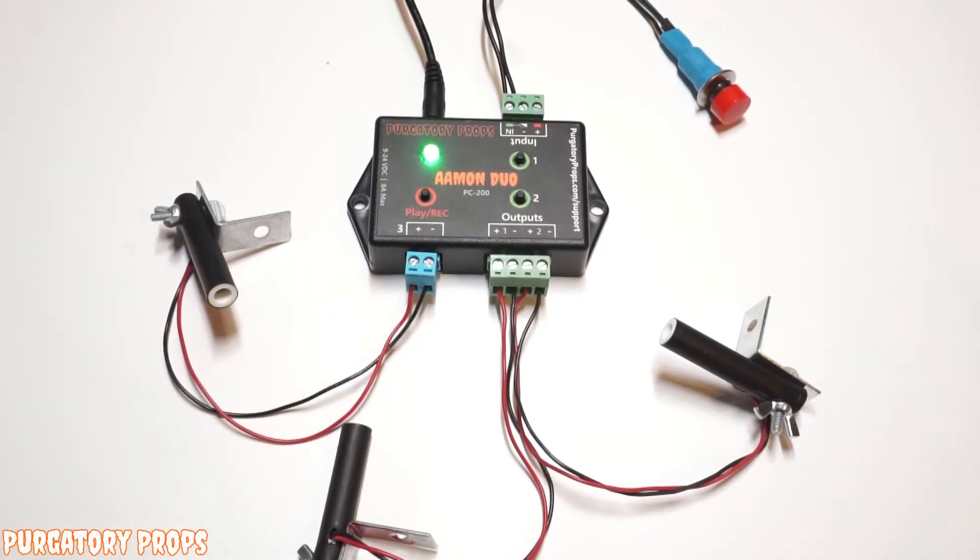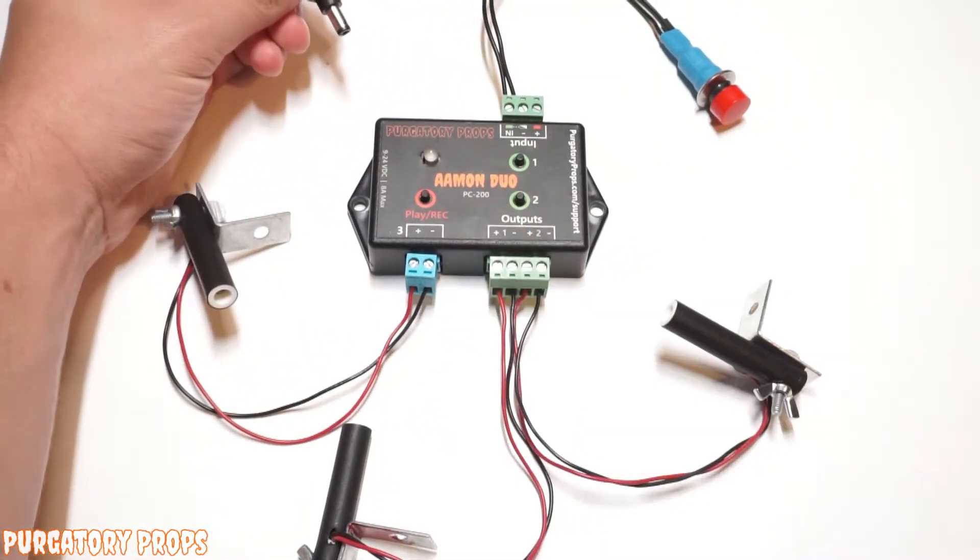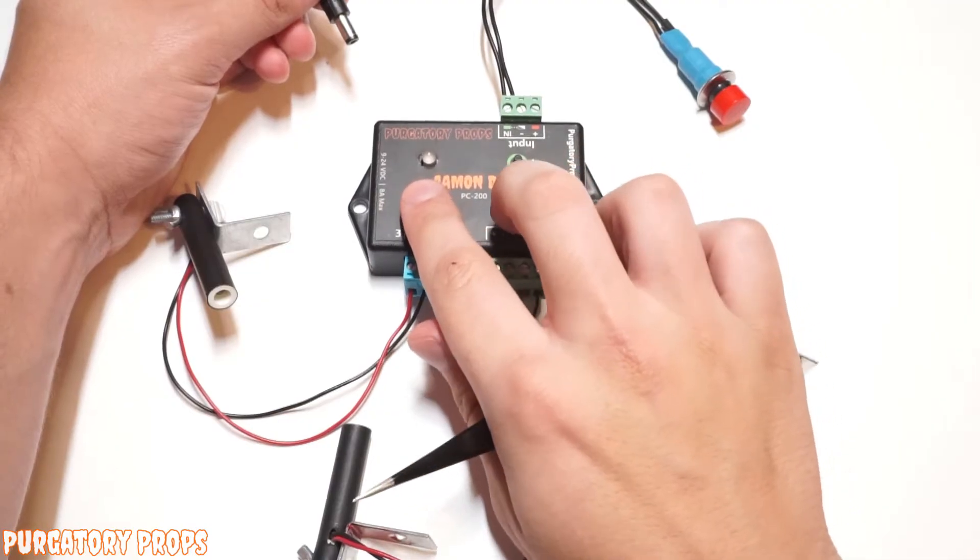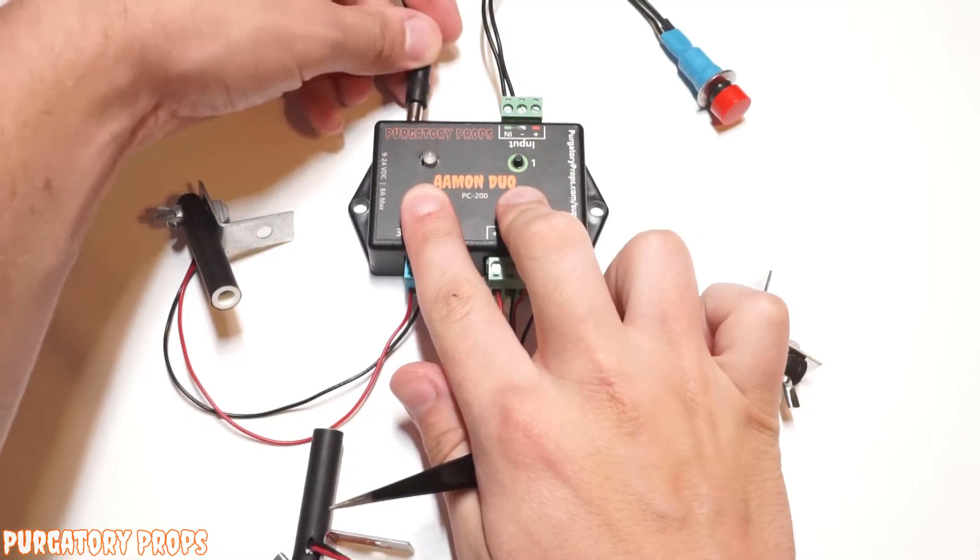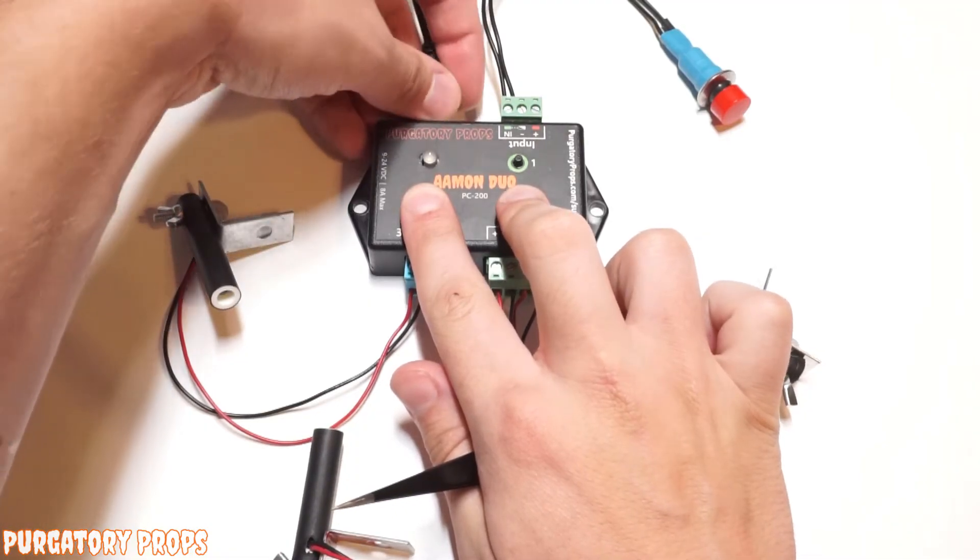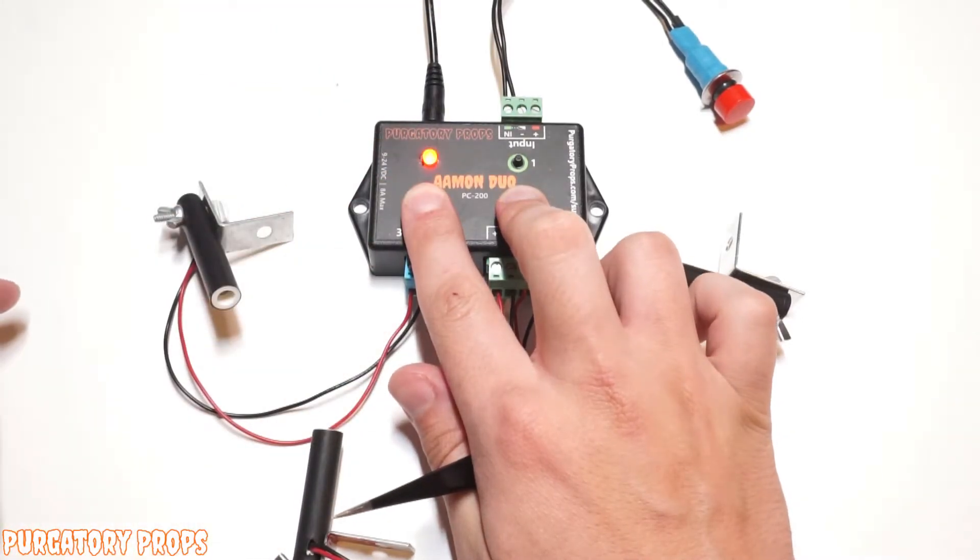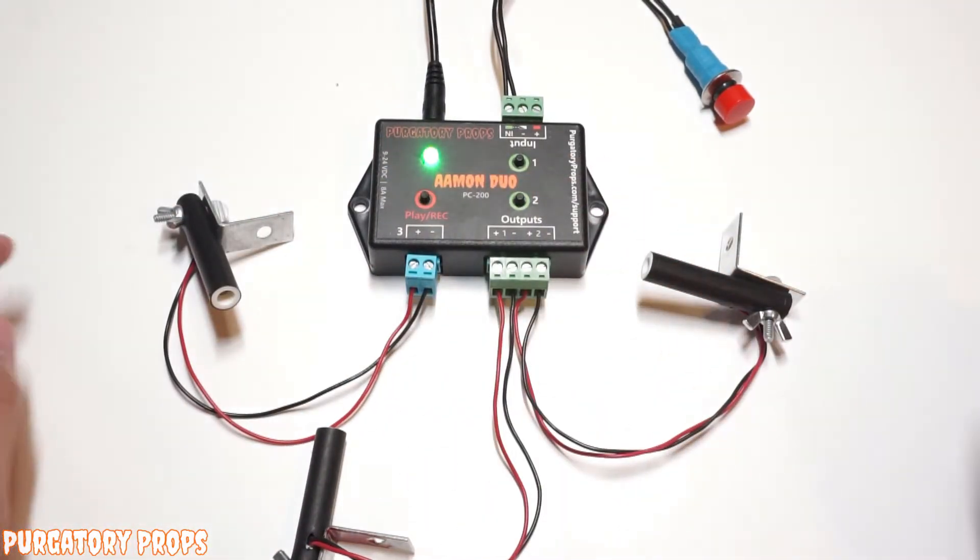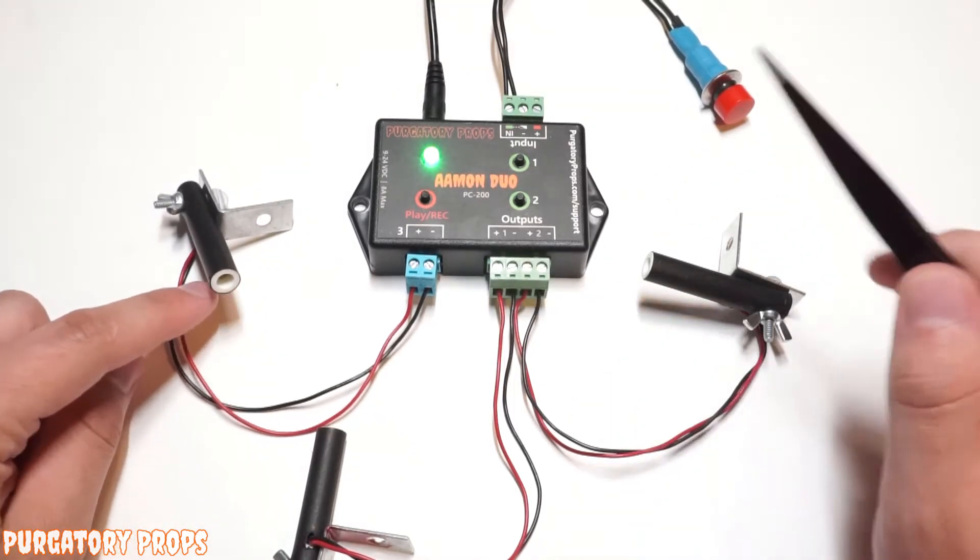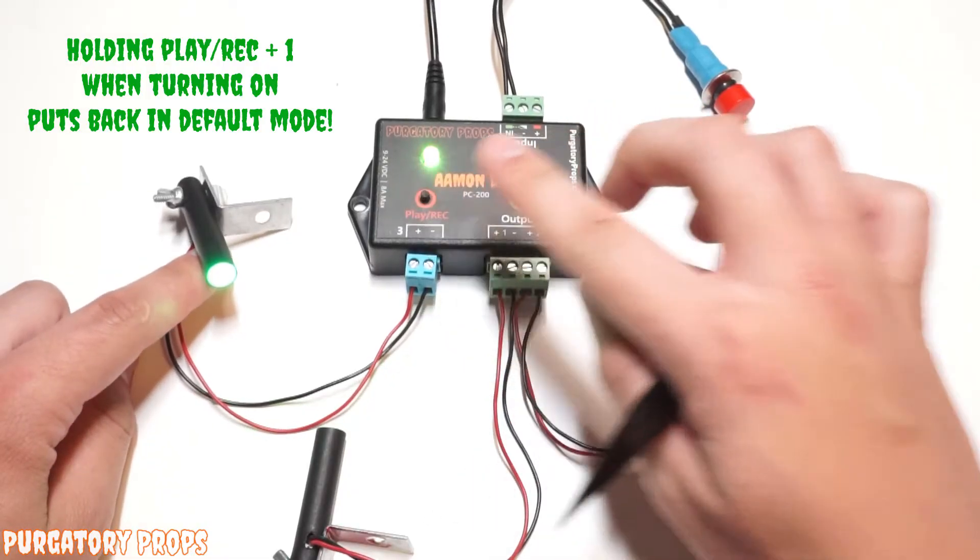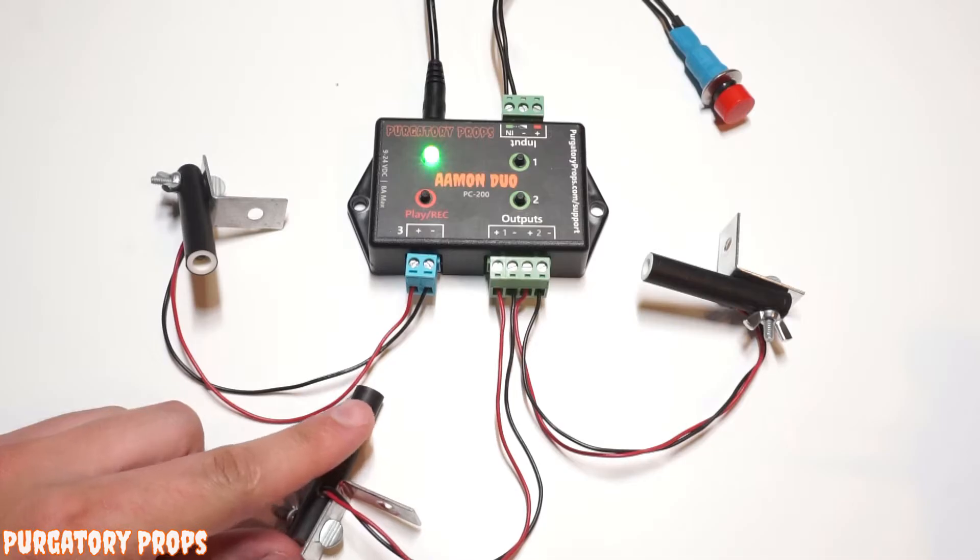So this has a couple of different modes. So if we unplug the Amon Duo, and then if we hold the play record button and the output 2 button, and then we plug back in the Amon Duo, the light will flash blue, we'll keep holding, and that turns red and we can release. So now this is set output 3 into start mode. So now when we play this, it will only be on for the first second of the animation.